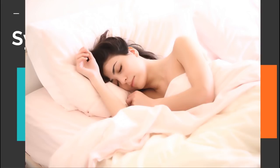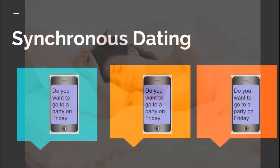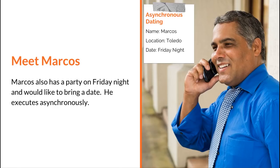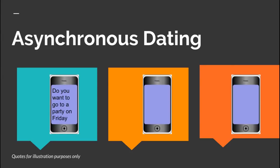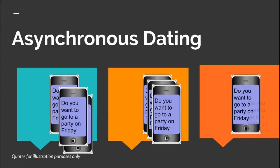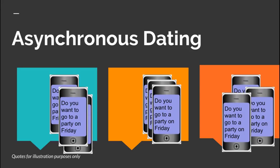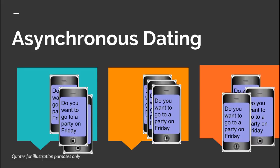But he did get a date with her later on and they're pretty happy right now. Now let's meet Marcus. Marcus is an asynchronous dater. He also has a party on Friday night and would like to bring a date. So he's going to go ahead — he's going to text Betty, he's going to text Sally, he's going to text Michelle, and he's just going to keep texting people until somebody finally responds and says yes. He sent out so many texts, of course he did get a date for Friday night.